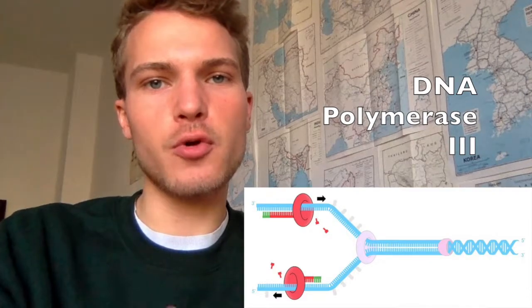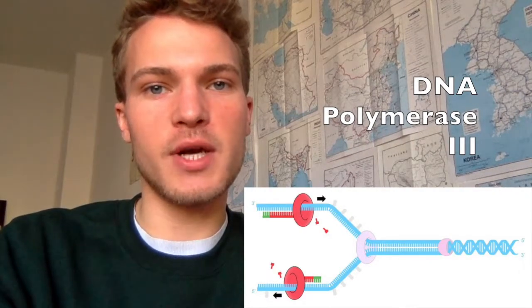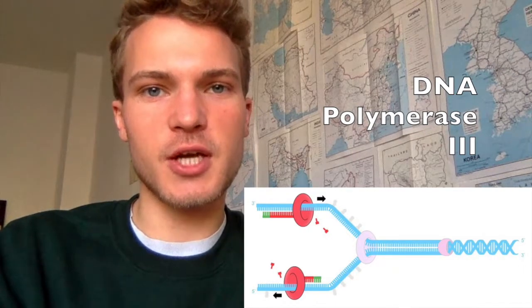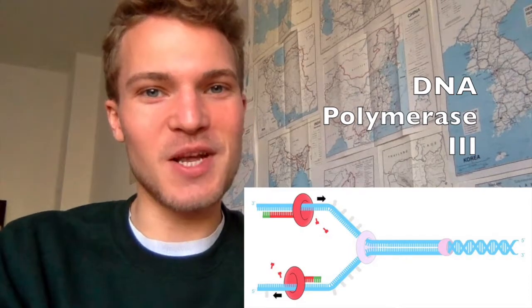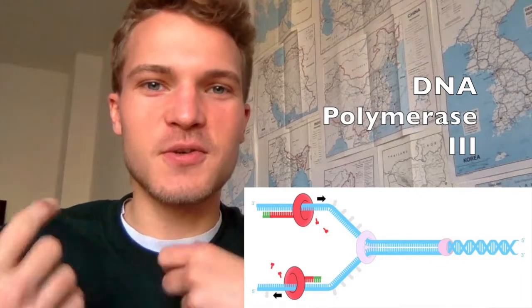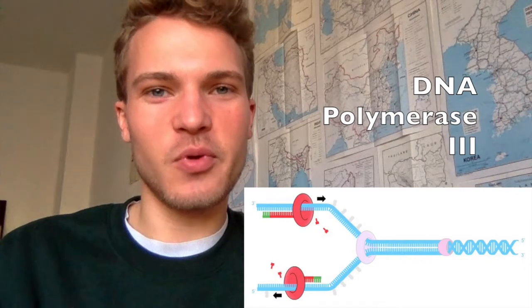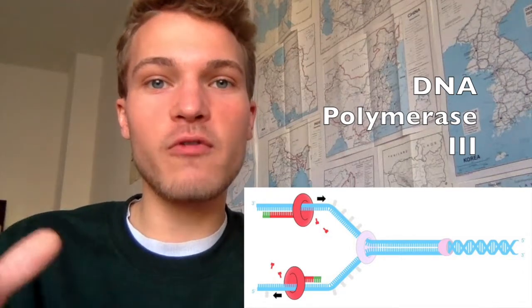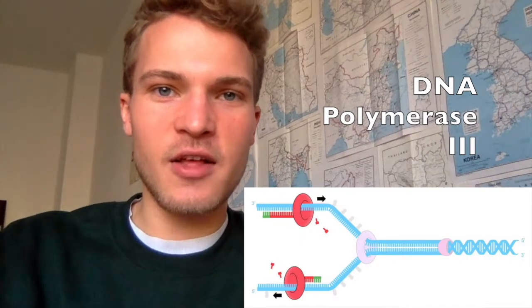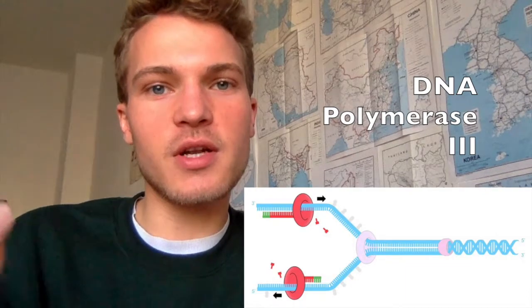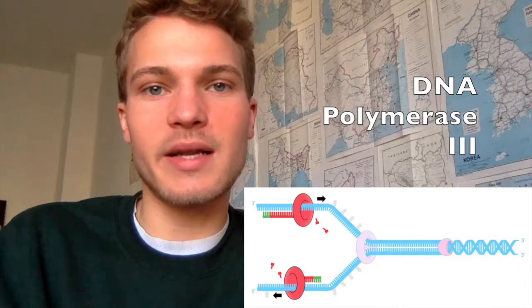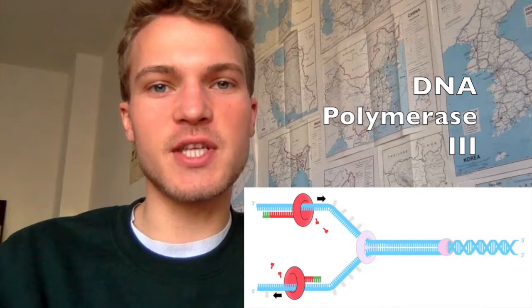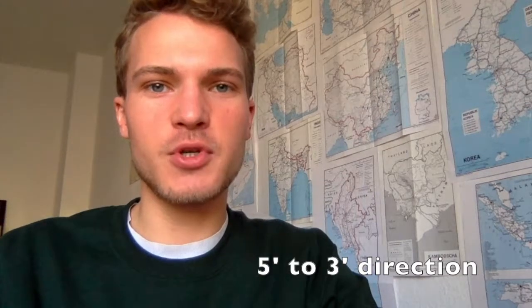The most central part of replication is the action of DNA polymerase III, which creates a long continuous chain of nucleotides bound together. The nucleoside triphosphates floating around are joined covalently in a phosphodiester bond, creating the backbone. Which nucleoside triphosphates are added depends on complementary base pairing — thymine, guanine, and cytosine pairing in their respective configurations. Critically, DNA polymerase III can only work in one direction: the 5' to 3' direction.